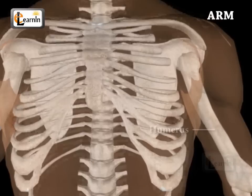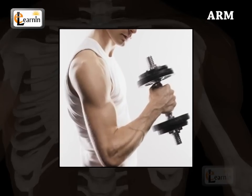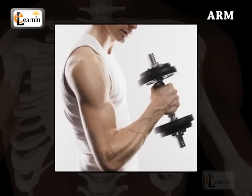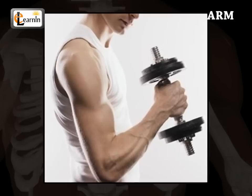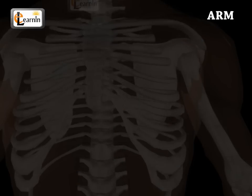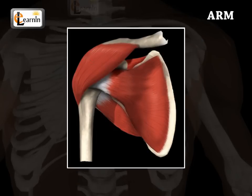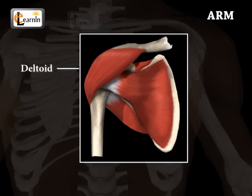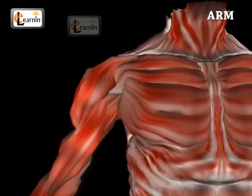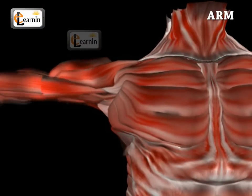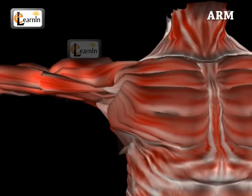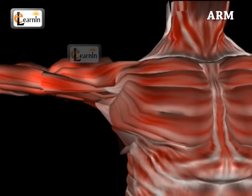The humerus is considered to be quite strong, with an average strength that can handle loads and weights of about 140 kilograms. The large muscle which forms the shoulder cap is called the deltoid. The deltoid helps in raising the arm from the sides, and also runs from the shoulder blade to the middle of the humerus.